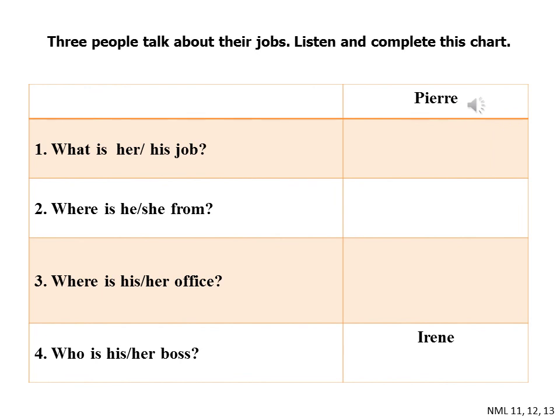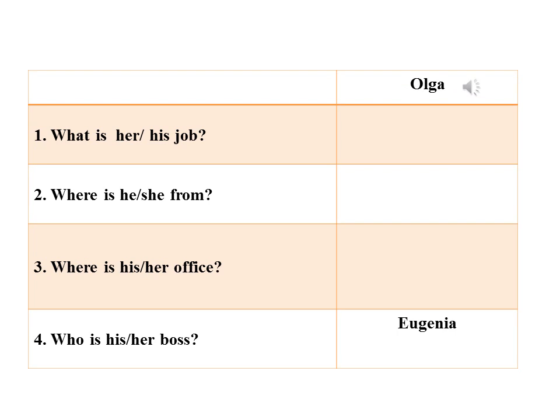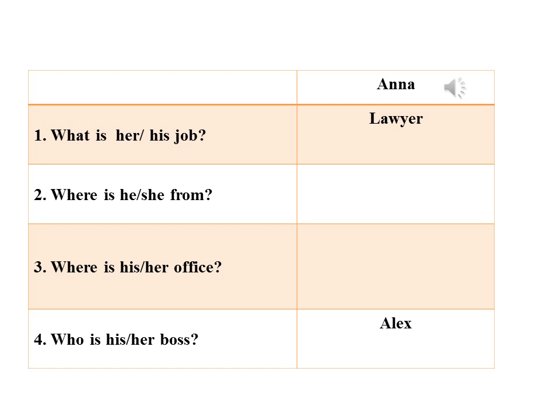Hi, I'm Pierre. I'm an architect. I'm from Switzerland. My office is in Zurich. My boss is Irene. I'm Olga. I'm an engineer. I'm from Russia. My office is in Moscow. My boss is Eugenia. I'm Anna. I'm a lawyer. I'm Polish. My office is in Poznan. My boss is Alex.